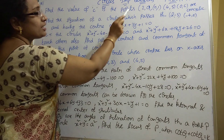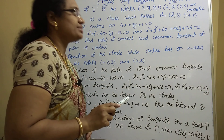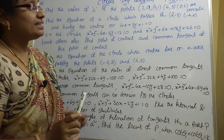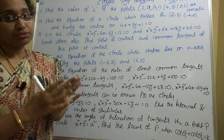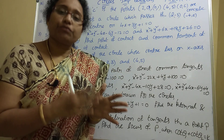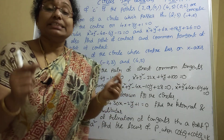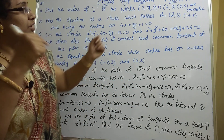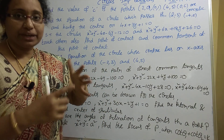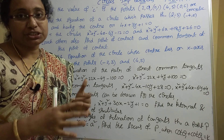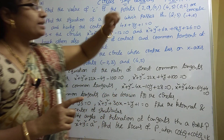First question: Find the value of c if the points (2,0), (0,1), (4,5), (0,c) are concyclic. The concyclic model is very important. The general equation of a circle is x² + y² + 2gx + 2fy + c = 0. Apply each point to get values, find g, f, c, then apply to the general equation. The fourth point gives you the value of c.